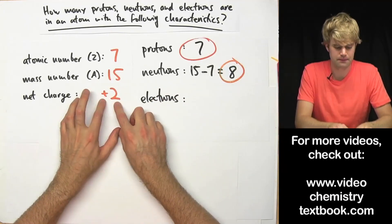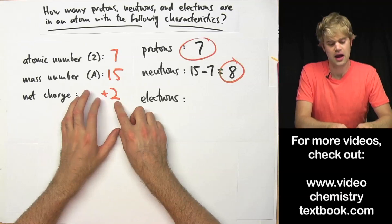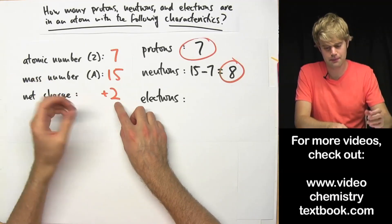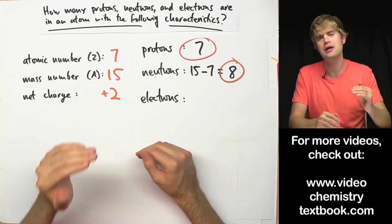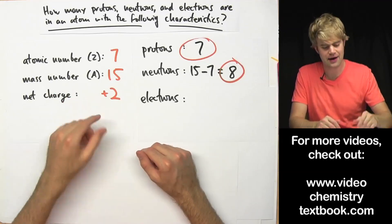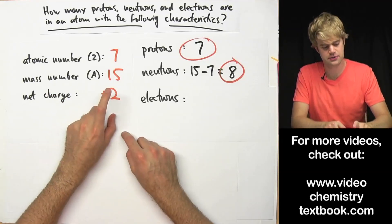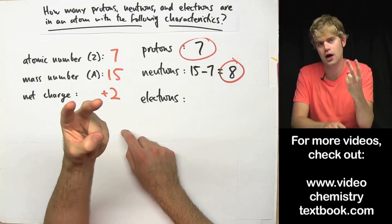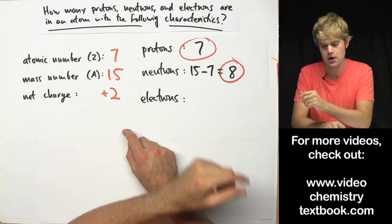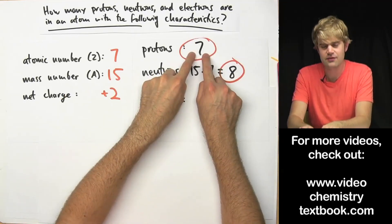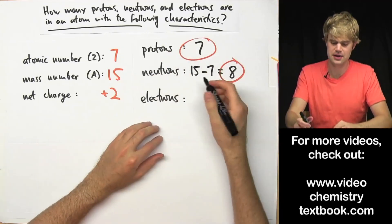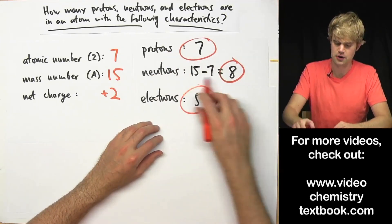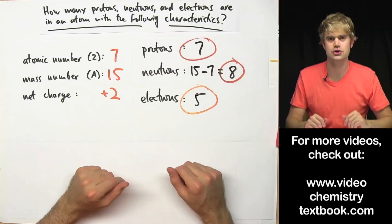Net charge here is plus 2. If I have a positive net charge with a certain number, that's telling me how many more protons I have than electrons. So in this case, net charge of plus 2, there are 2 more protons than electrons. Since I have 7 protons, that means that I have to have 5 electrons to get a 2 plus charge.